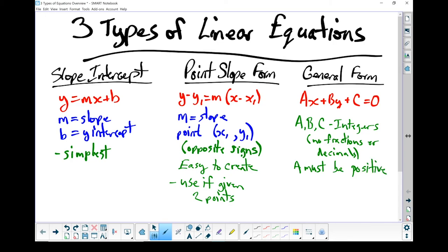In many ways, this general form is more complicated to work with than the other two. Because the pieces in there, the a, b, and the c, don't give us anything directly off the graph.